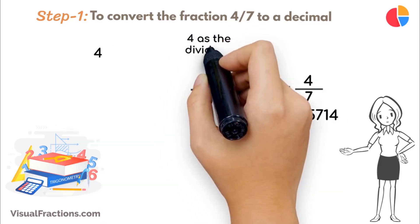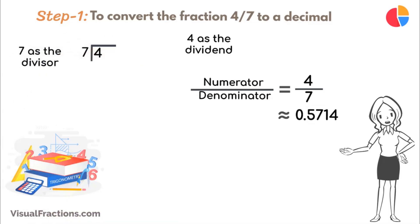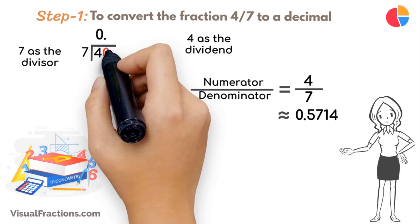Place 4 as the dividend and 7 as the divisor. Since 7 doesn't fit into 4, place a decimal point in our quotient and bring down a 0, making it 40.